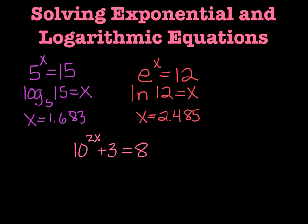It might get a little harder. There's a little plus 3, 10 to the 2x plus 3 equals 8, so first I have to take away 3, get the exponential part all by itself, and then we can rewrite it as a log base 10 of 5 equals 2x, and then we can punch in log 5 in the calculator, divide it by 2, x equals .349.